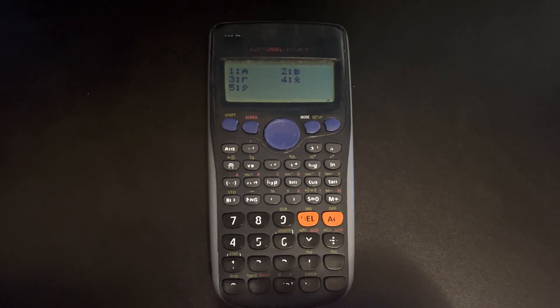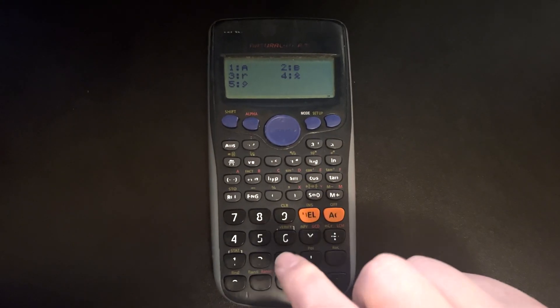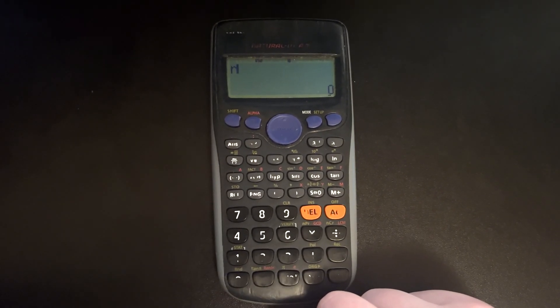Once again, we have quite a few different options here, but we recognize r, option 3, as being the variable for Pearson's correlation coefficient.